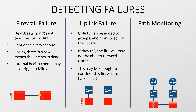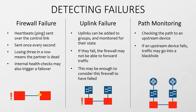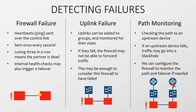The third consideration is path monitoring, where something not directly connected to the firewall fails. This might not sound so bad, but if it's a critical upstream router, it can still break the network. Depending on how the network was designed, we may want this to cause a failover to take an alternate path. We can do this by configuring path monitoring, which uses something like ping to check if a device on the network is up, and if it's not, the firewall can take action.